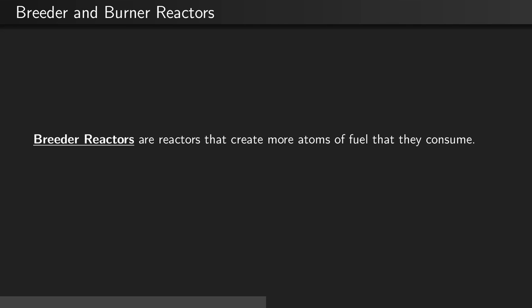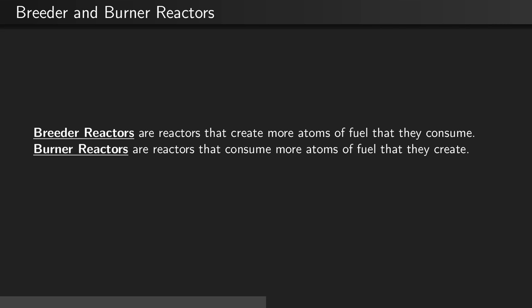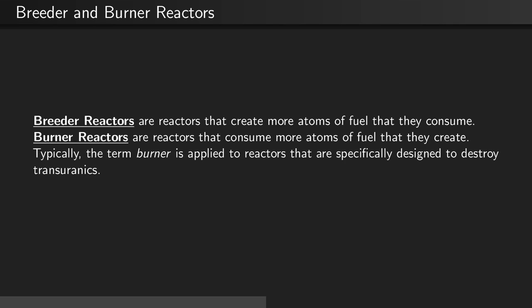Breeder reactors are reactors that create more atoms of fuel than they consume. Burner reactors are reactors that consume more atoms of fuel than they create. Typically, the term burner is applied to reactors that are specifically designed to destroy transuranics.